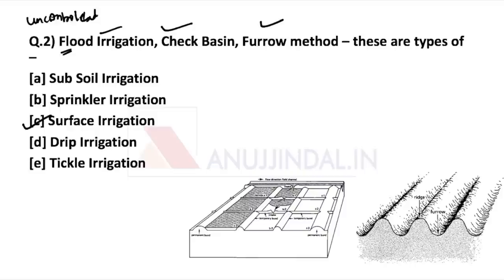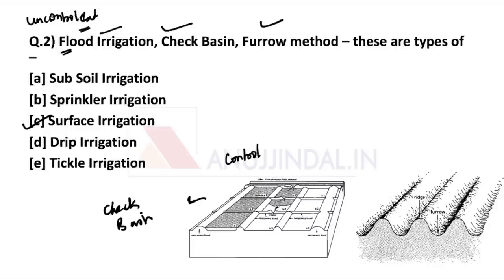Next is the check basin method. The field is divided into a number of almost leveled plots. Water is admitted to each plot turn by turn — first water is given to one panel, then to the next. This is how a controlled amount of water is flowed. This is a good method of surface irrigation because the farmer can control the water. In flood irrigation, it is an uncontrolled method requiring high water availability, but where water is not abundant we can use the controlled method — the check basin.